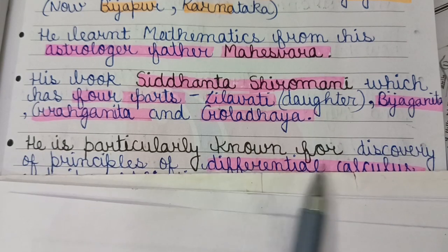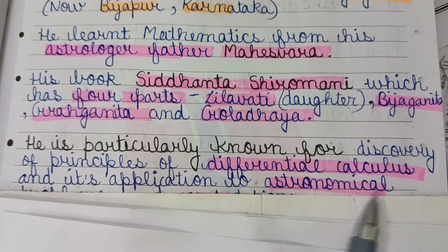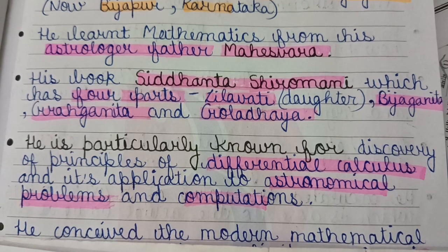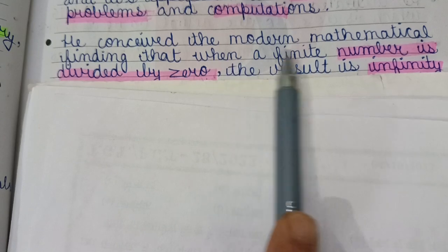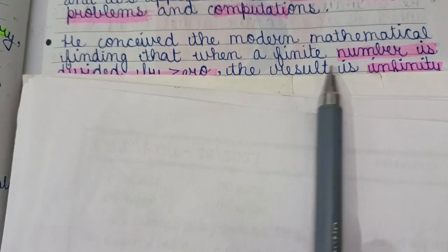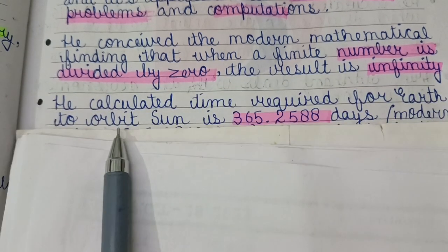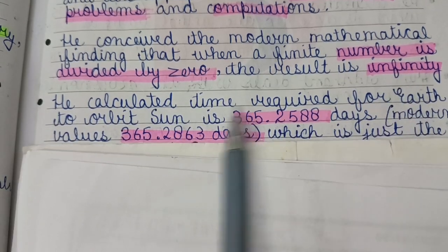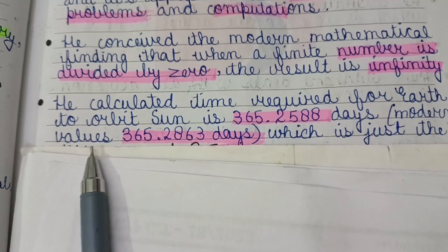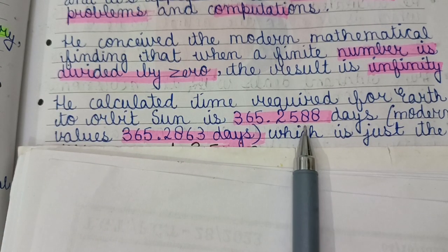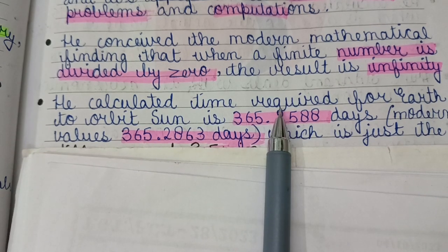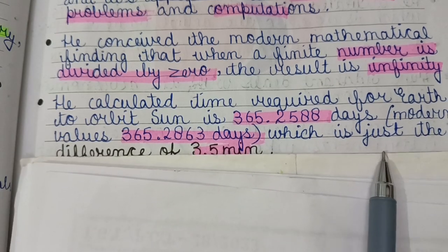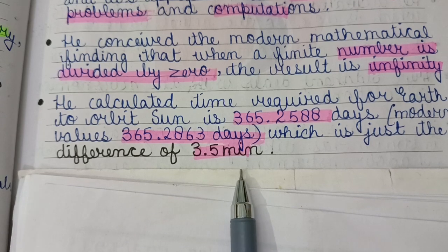He is particularly known for the discovery of principles of differential calculus and its application to astronomical problems. He conceived the modern mathematical finding that when a finite number is divided by zero, the result is infinity — he used the concept of infinity for the first time. He calculated the time required for Earth to orbit the Sun as 365.2588 days, while the modern value is 365.2863 days, a difference of only 3.5 minutes.